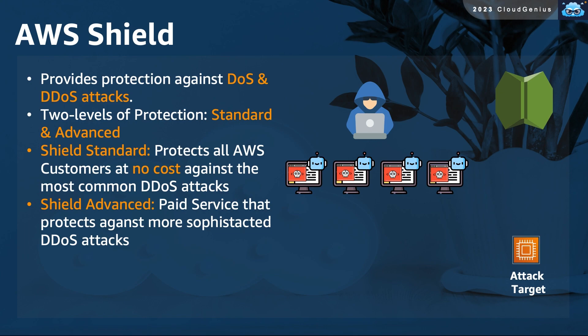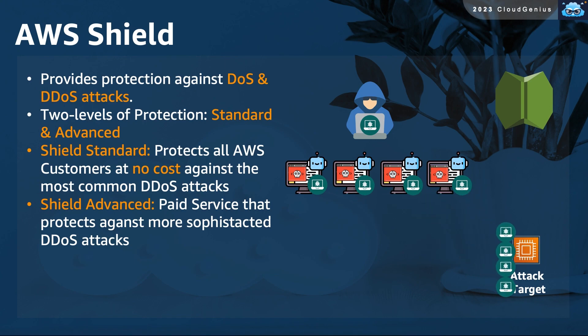The next service to mention is AWS Shield. Shield can be used to protect your resources against a very popular and annoying kind of attack, known as denial-of-service, or its modified version, the distributed denial-of-service attack. The attacker manipulates many other machines to launch the attack against the target concurrently, sending malicious traffic and a massive number of requests in a way that overwhelms the target, making it unable to process normal legitimate traffic and requests.